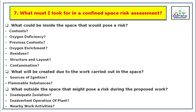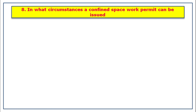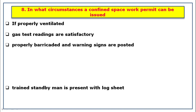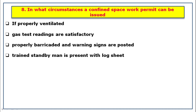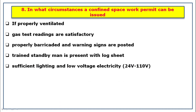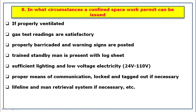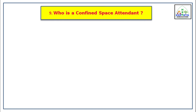In what circumstances can a confined space work permit be issued? A confined space work permit can be issued if the confined space is properly ventilated, gas test readings are satisfactory, it is properly barricaded with warning signs posted, a trained and competent standby man is present with a locksheet, there is sufficient lighting and low-voltage electricity, proper means of communication, lockout/tagout if necessary, and a lifeline and man-removal system if necessary.